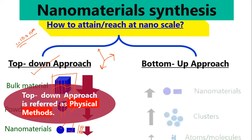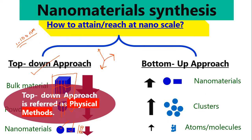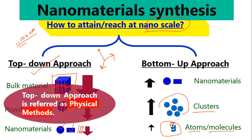Now let's discuss the bottom-up approach. In both methods, top-down and bottom-up, our target is to reach the nanoscale. In the bottom-up approach, it's like placing one brick, then another brick, to make a wall. Similarly, we take one atom or molecule, they combine with each other to make a cluster, and then that cluster grows through a process called nucleation into a nanostructured material.